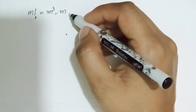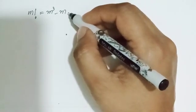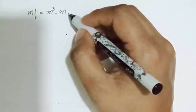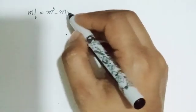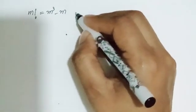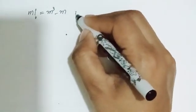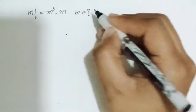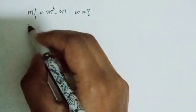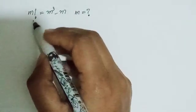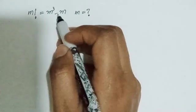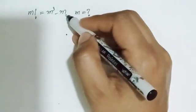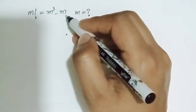Hi everyone. Here I have a very nice equation to prove for the value of m. What I have to find in this equation is the value of m. The equation is: m factorial is equal to m cubed minus m.